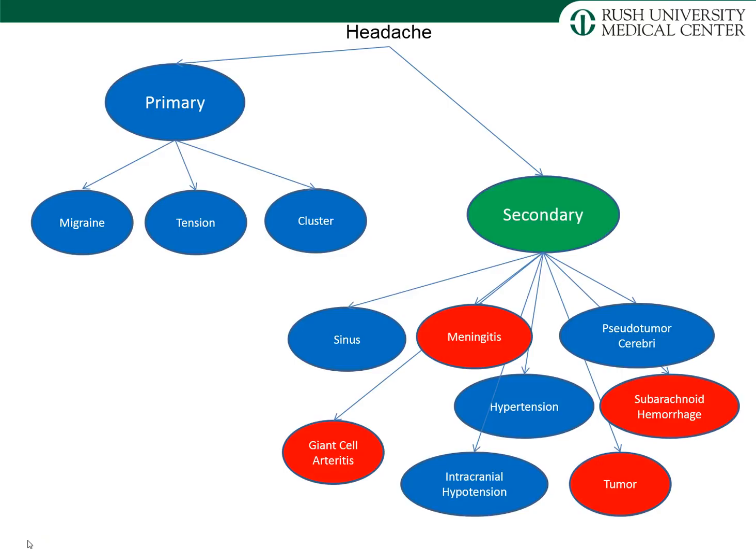There are three primary headache disorders: migraine, tension headache, and cluster headache. There are several secondary causes of headache, including giant cell arteritis, meningitis, subarachnoid hemorrhage, and tumor — all of which are concerning causes that need to be diagnosed quickly. We also have pseudotumor cerebri and intracranial hypotension, and finally sinus and hypertensive headache. Sinus headache will not be covered here, nor will hypertensive headache, which is rare.